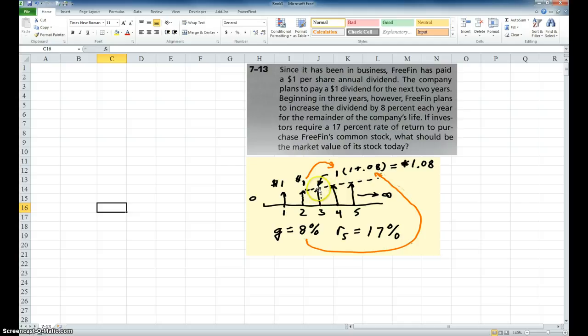So that's going to equal $1.08 in the third year. In the fourth year, it's going to be whatever the $1.08 times 1.08. It's going to increase and increase all the way up to infinity. And so if I take all these cash flows, and I collapse them back to time zero, in other words, find the present value of all these individual cash flows, what is that going to be worth today using this rate of return?